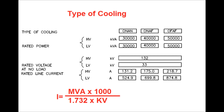For 40 MVA, the HV side current is 175 A and the LV side current is 699.8 A. For 50 MVA, the rated line current is 218.7 A on the HV side and 874.8 A on the LV side. These are the full load rated currents on the HV side and LV side.